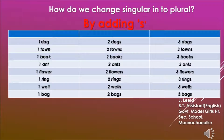Rule number one of making plurals is just by adding an S after the noun. Look at these words. A single dog is called a dog, whereas more than one are called two dogs and three dogs. In the same way: one town, two towns, three towns; one ant, two ants and three ants; one flower, two flowers and three flowers, and so on.